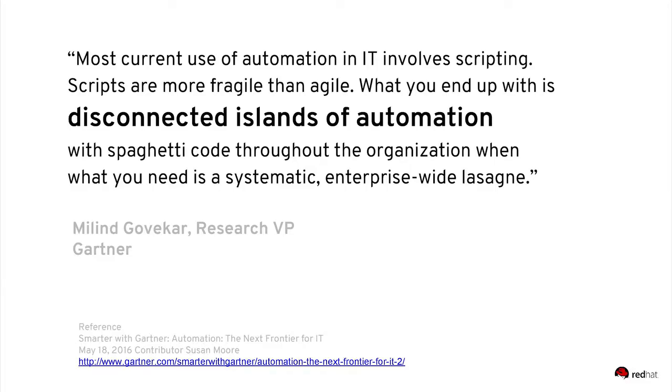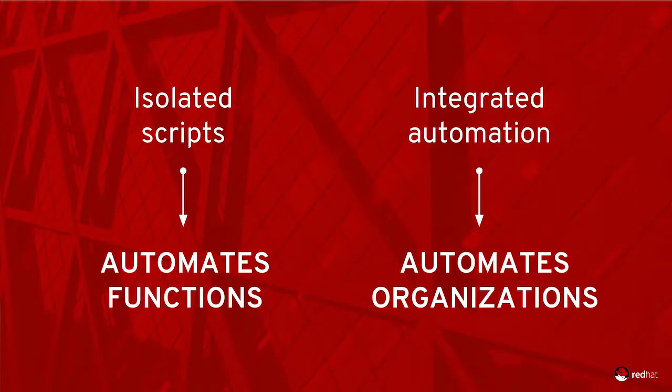This is a quote from our friends at Gartner and I picked it out because I like the visual here. Today in a lot of organizations you have this concept of disconnected islands of spaghetti code. But what you really need in your organization is an automation lasagna across your enterprise, and who doesn't like lasagna? In other words, your isolated scripts are actually automating functions. But we're in a place now where you really need to think about integrated automation across your organization to automate your entire organization.